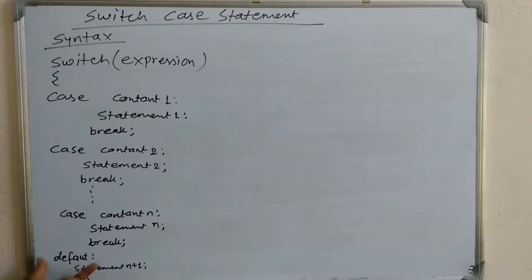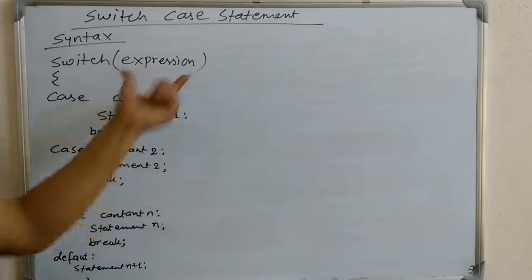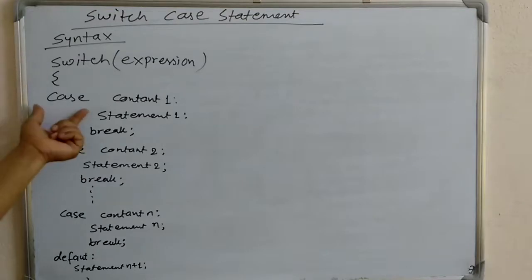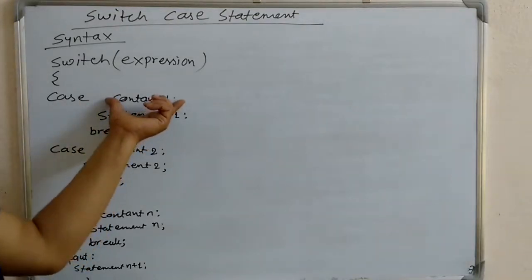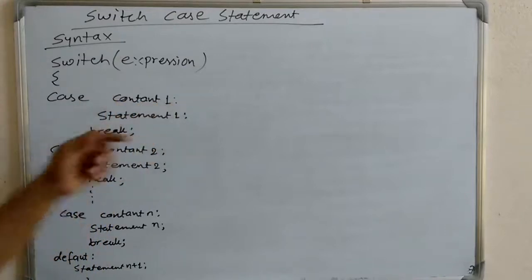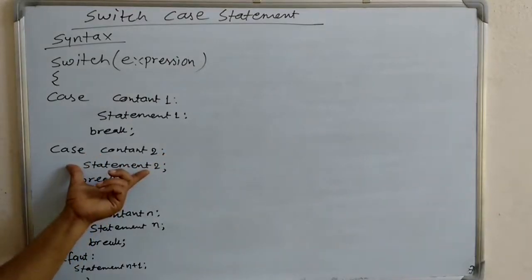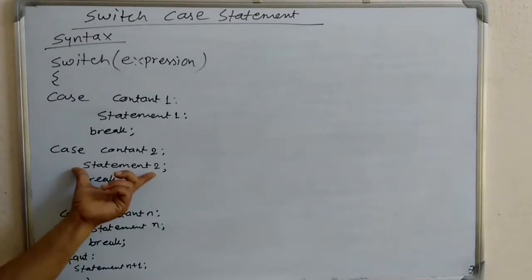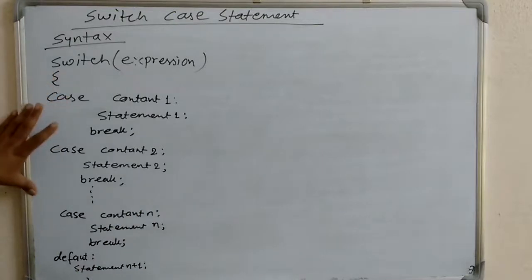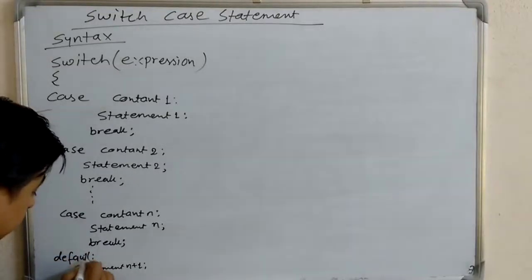Because after executing the default value, it comes out from the switch case. So in this way we can write the syntax of switch: the switch keyword, the expression whose result is an integer value, start the curly braces, then case constant one, case constant two — if a constant is matched it executes that statement. If it is not matched with any one of these options, then it executes the default statement.